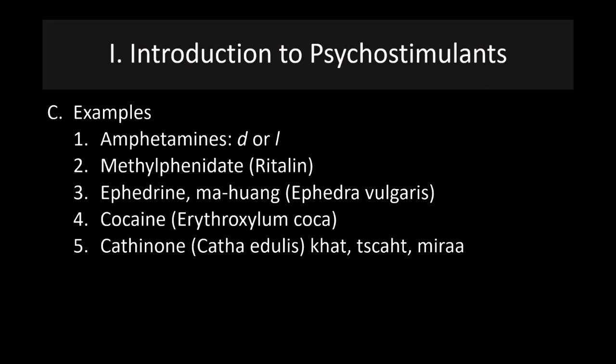Examples of psychostimulants include the amphetamines: Adderall is a racemic mix of dextro- and levoamphetamine; Dexedrine is just dextroamphetamine or d-amphetamine; methylphenidate is also known as Ritalin. Ephedrine is available in herbal form as ma huang or ephedra, but both were banned in the 90s. Cocaine has been illegal since the early 20th century. And then cathinones, including khat, and related compounds.